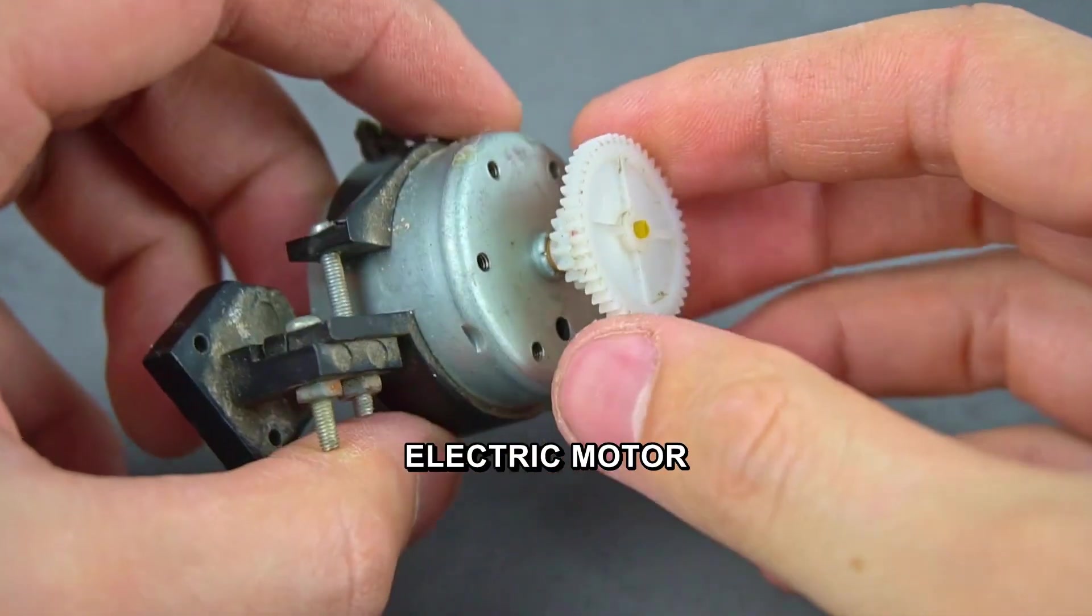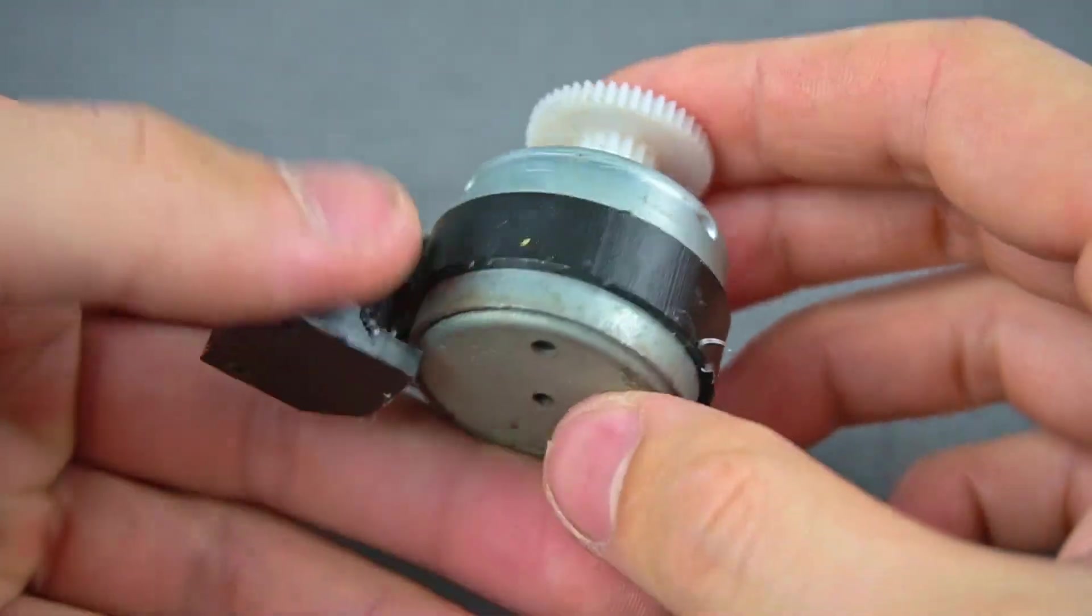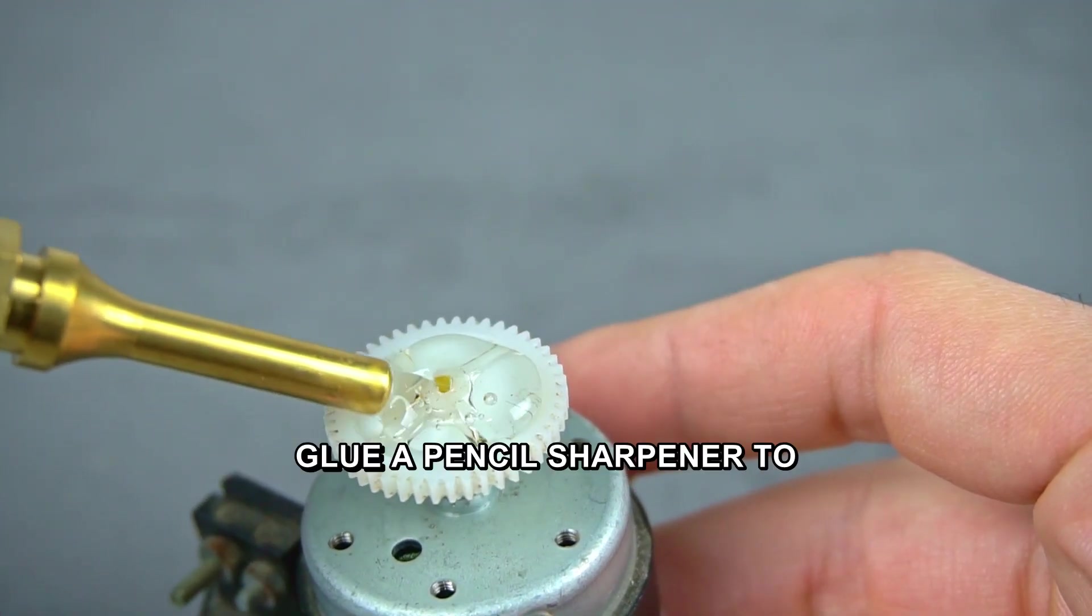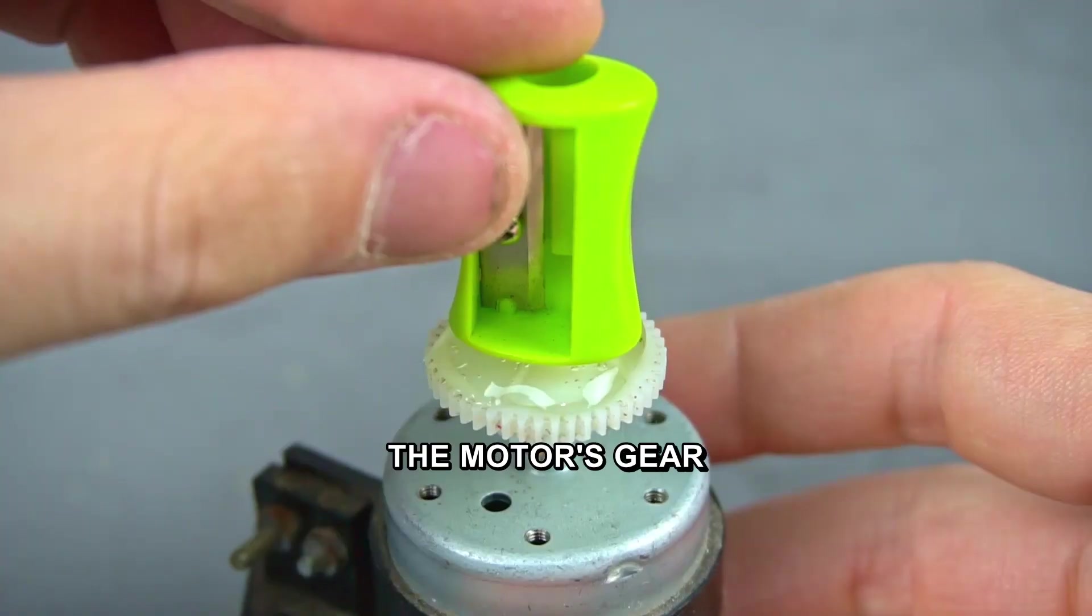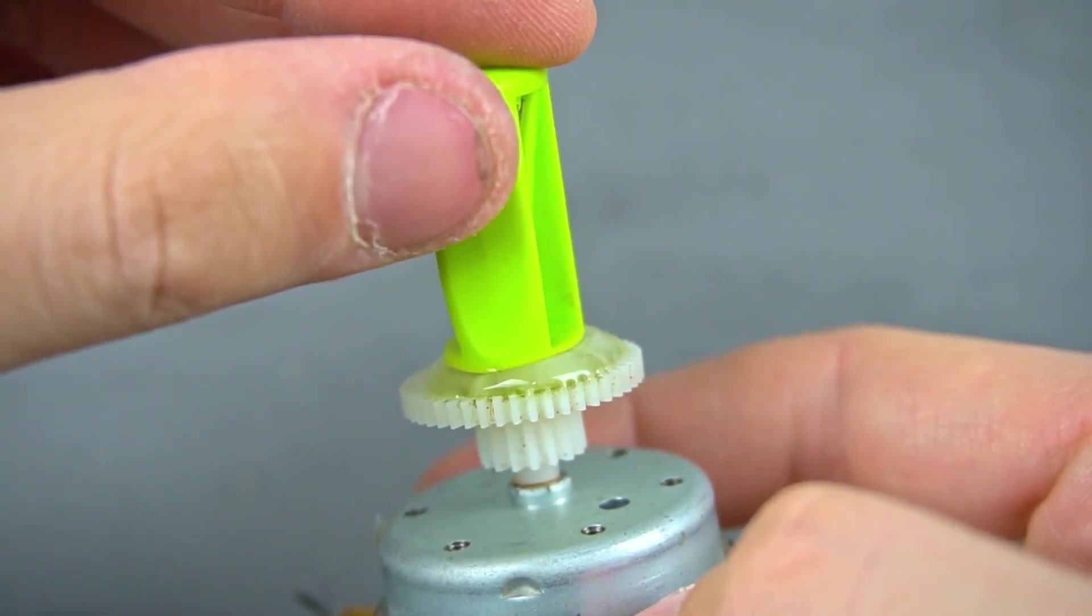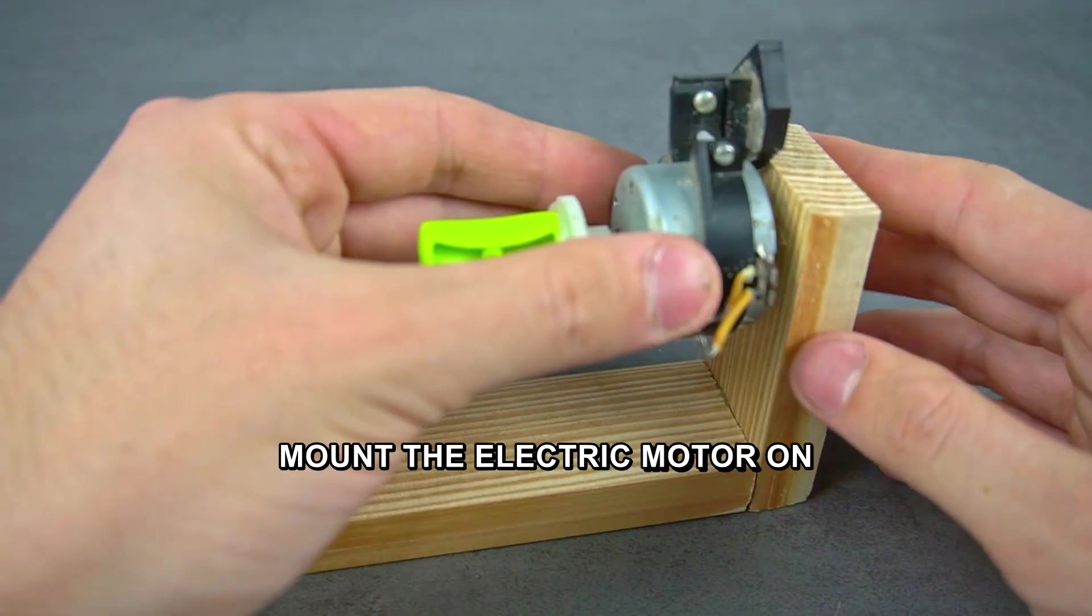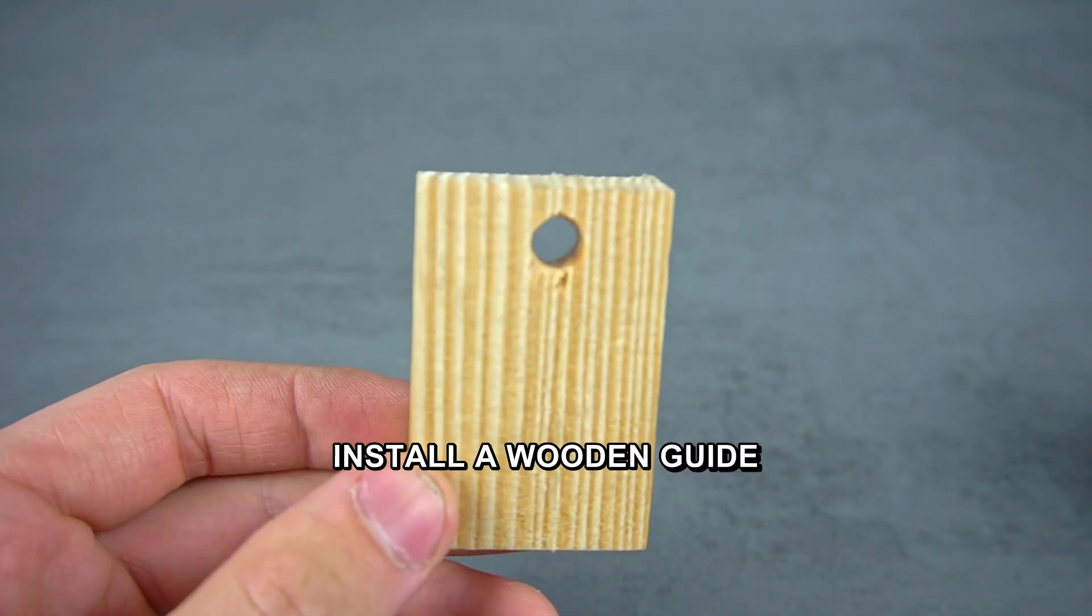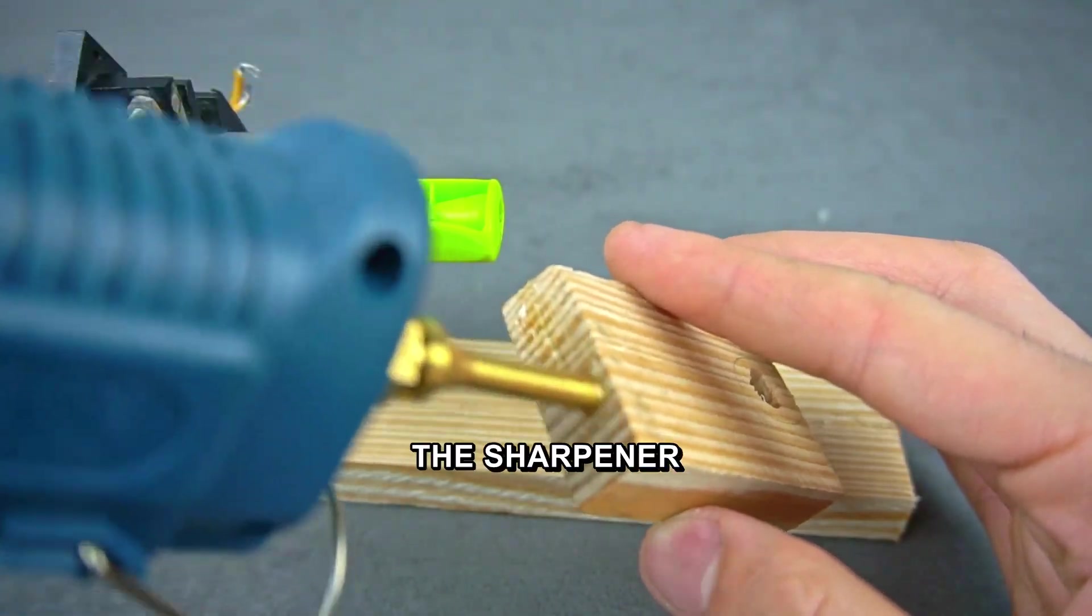Take an unwanted electric motor with a gear. Glue a pencil sharpener to the motor's gear. Mount the electric motor on a wooden stand. Install a wooden guide block with a hole opposite the sharpener.